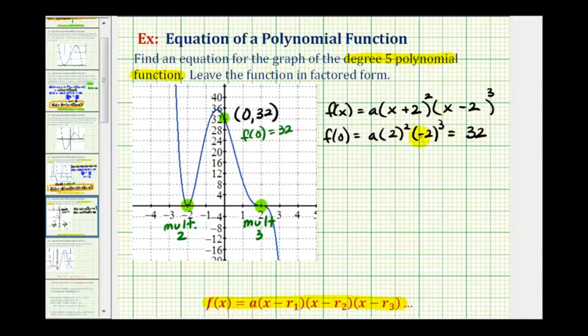Now we'll go ahead and simplify here and solve for a. Well two squared is four, and negative two cubed is negative eight. Four times negative eight is negative thirty-two, so we have negative thirty-two a here equals thirty-two. Divide both sides by negative thirty-two, so we can see that a is going to be equal to negative one.